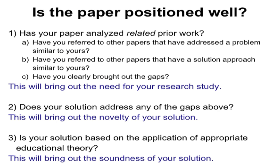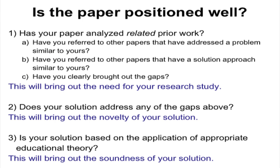Moving on, how do you know if your paper is positioned well? You want to analyze the related prior work. Often what we think is that it is sufficient to put a section in the paper called 'related work.' Many people make the mistake of saying that every paper should have sections: introduction, literature survey, method, results and analysis — and think that having those sections makes it a good paper. That is not true. It is not enough to simply say these are the things already done. What is important is to clearly bring out the gaps.